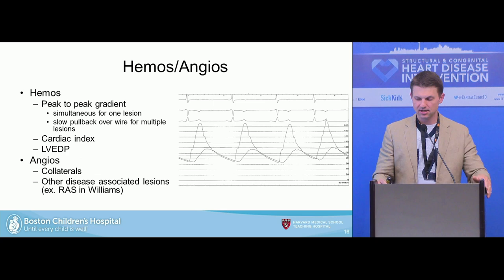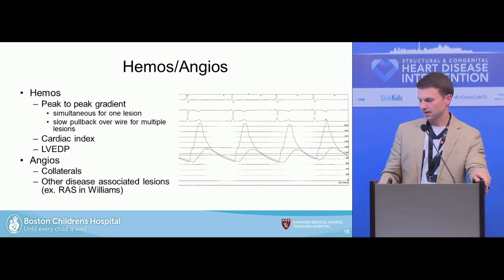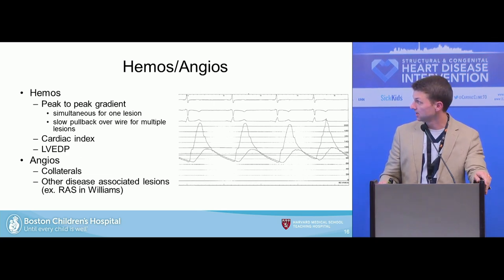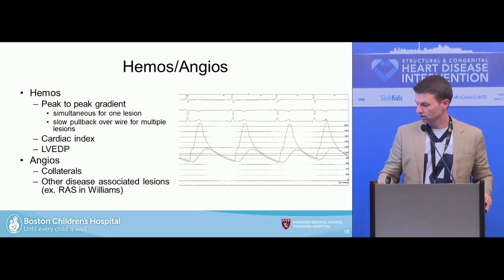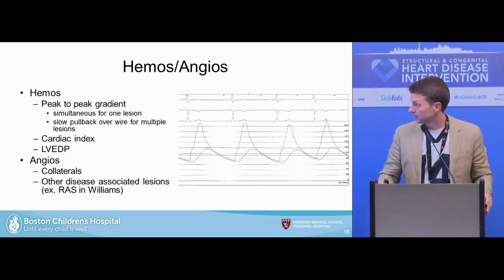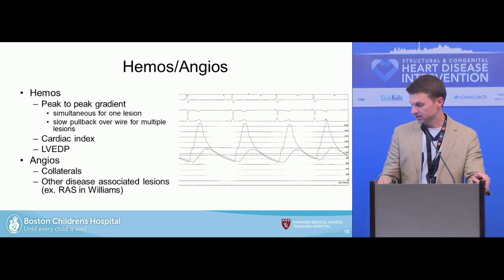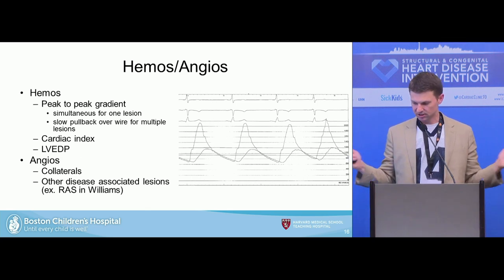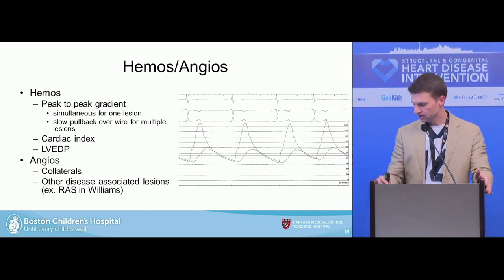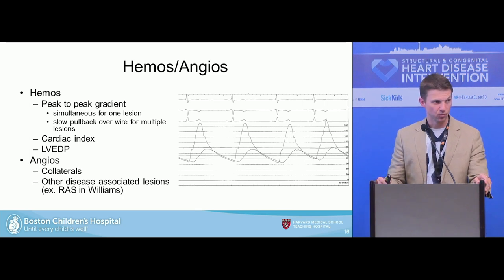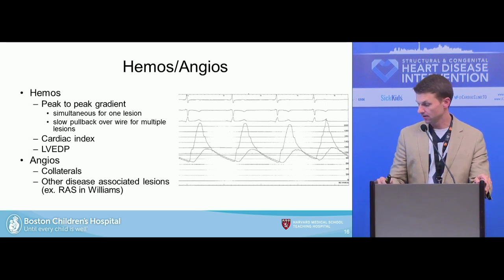You're looking at your peak-to-peak gradient, usually with some catheter-sheath mismatch to get a simultaneous gradient. If there's more than one lesion, just do a slow pullback over a wire. Look at your cardiac index and LVDP, because that factors into your decision, particularly if your peak gradient is less than 20. Look for the presence of collaterals on your angiography, consider other disease-associated lesions such as renal artery stenosis in Williams syndrome, and take that picture below the diaphragm.